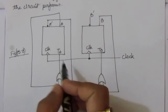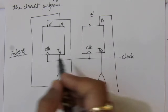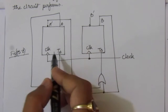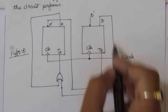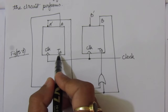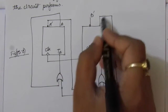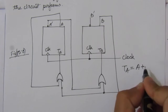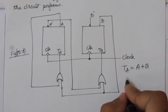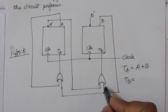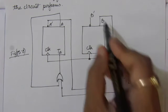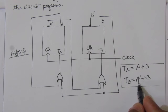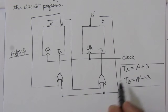This is the given circuit. We have T at the input of both flip-flops, so we can assume them to be T flip-flops. I have assumed TA and TB because we have two flip-flops here, with A and B as the outputs. The outputs are fed back through OR gates. So TA is the OR operation between A and B, giving us TA = A + B. Then TB is the OR operation between A complement and B, giving us TB = A' + B.